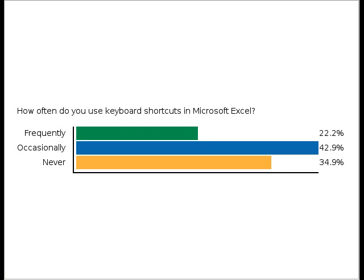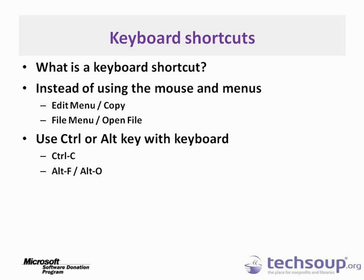So a lot of you already use keyboard shortcuts — maybe you're here mainly for pivot tables. The basic idea is that instead of using the mouse and menus — like mousing over to the Edit menu, clicking on Edit, mousing down to Copy, and clicking Copy — you just use a shortcut like holding down Ctrl and pressing C, which is the copy shortcut. Alternatively, to open a file using the keyboard, it's Alt+F then Alt+O.